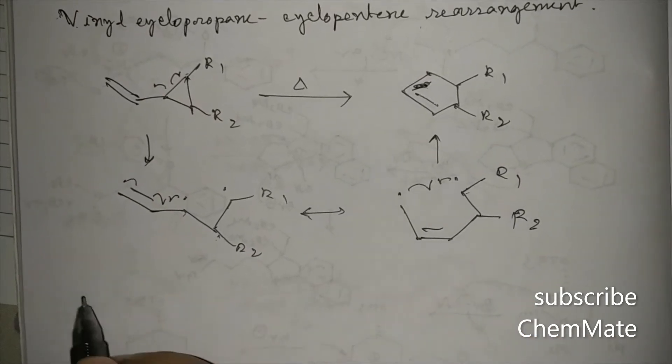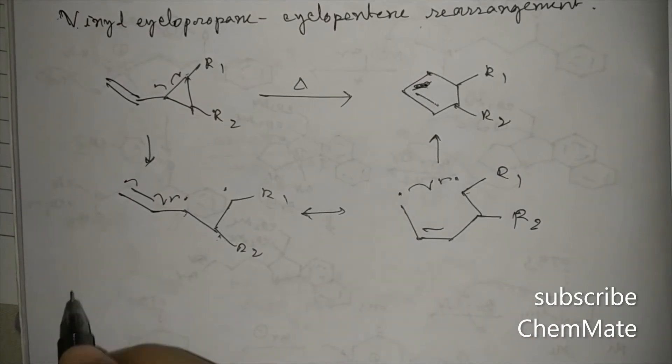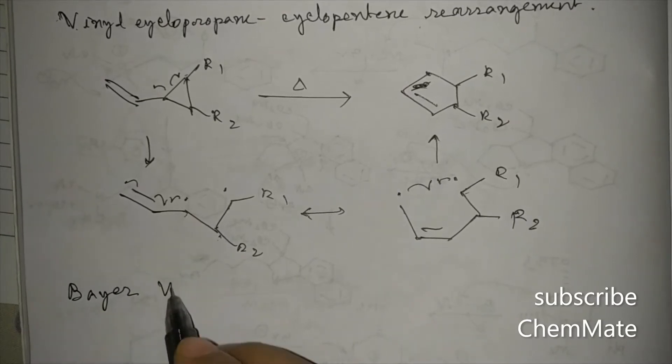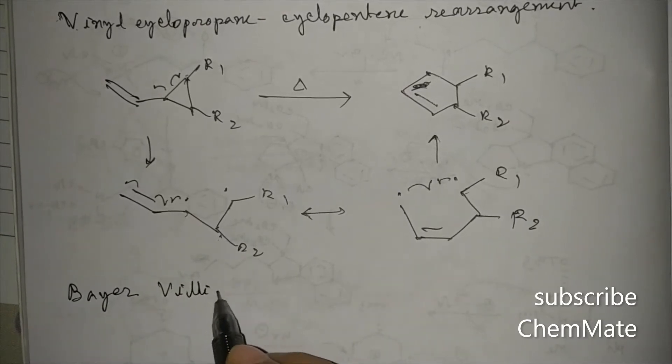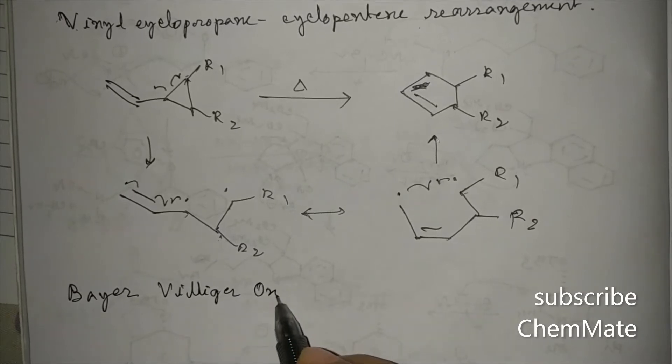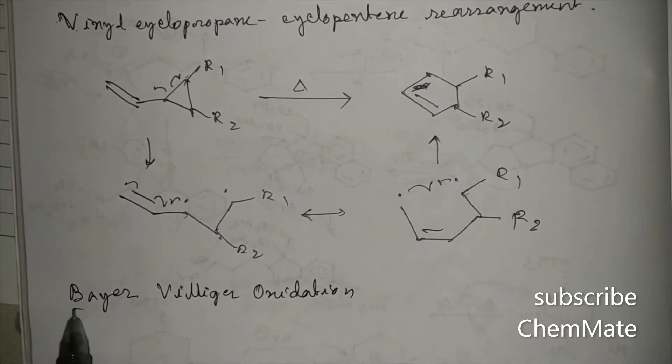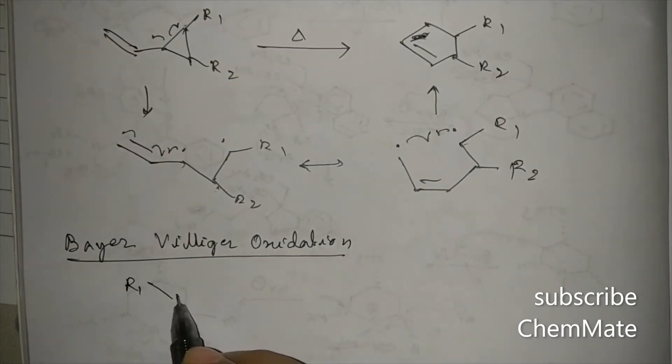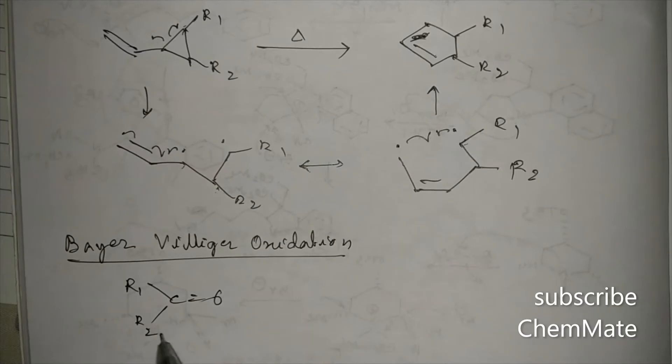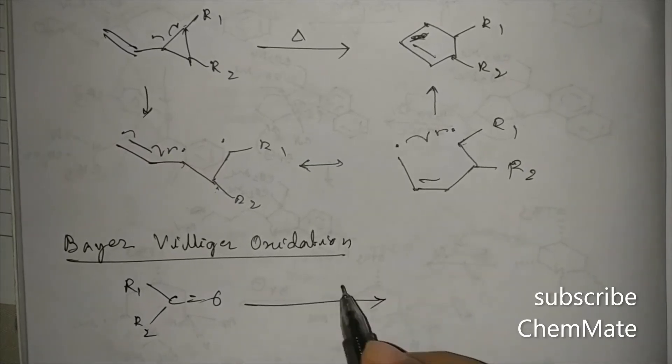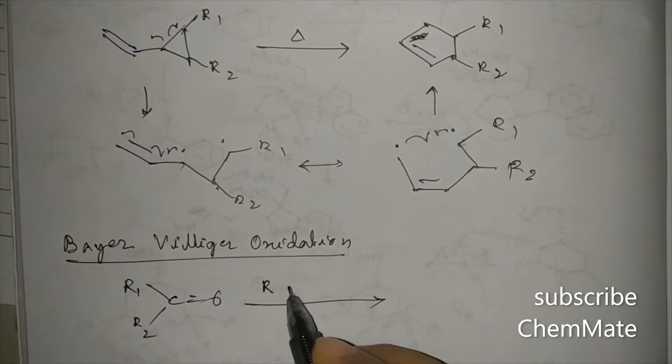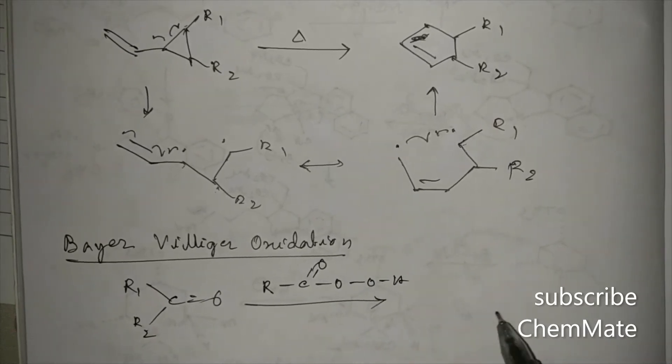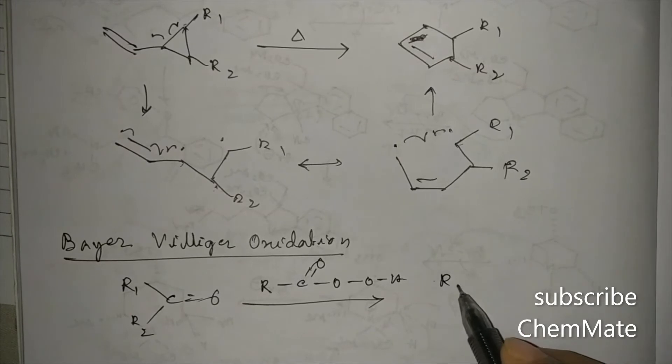And another reaction, that is Baeyer-Villiger oxidation. In Baeyer-Villiger oxidation, what happens? A ketone is treated with metachloroperoxybenzoic acid, that is a peracid, then it will be converted to an ester.